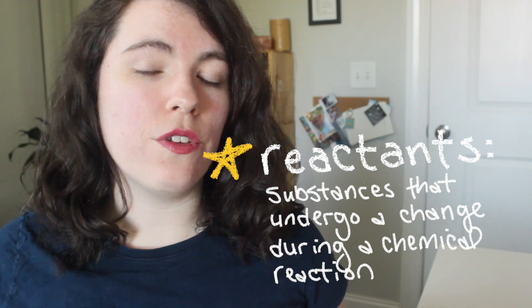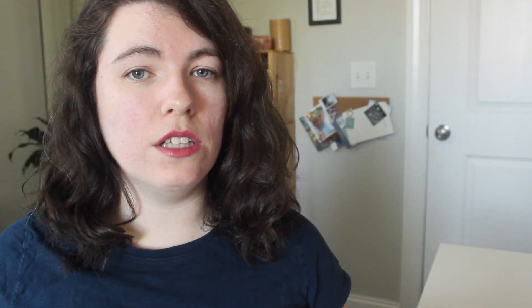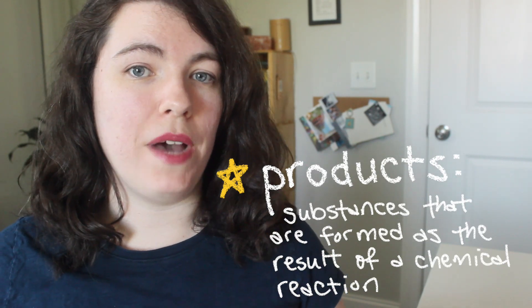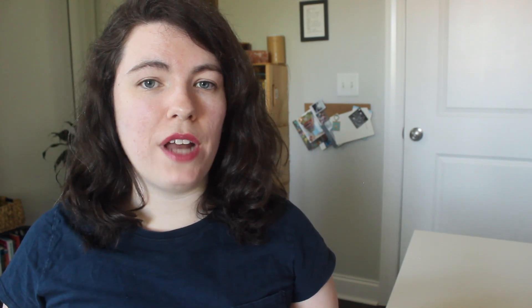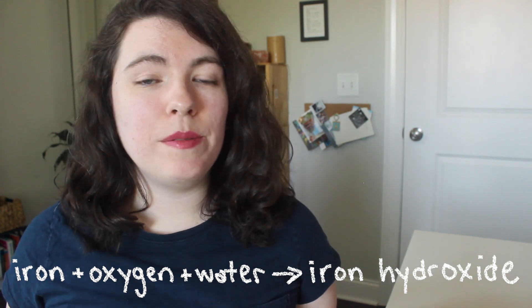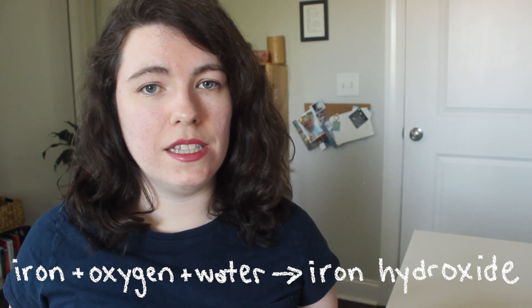The substances that you start with in a chemical reaction are called reactants, or the substances that will be reacting. And the substances you end up with are called products, or the substances that are produced by the reaction. A chemical reaction that you might be familiar with is the reaction between iron, oxygen, and water — these substances react to become iron hydroxide, or rust.